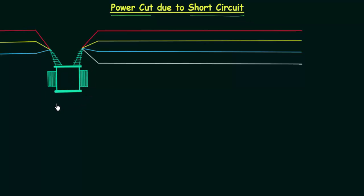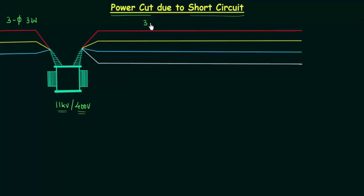We are using a transformer to step down 11kV to 400V. On the primary side of this transformer we have a 3-phase, 3-wire system. On the secondary side where we are getting 400V, we have a 3-phase, 4-wire system. There are 3 wires — red, yellow, and blue — and in addition to these 3 wires we also have one extra wire which we call neutral.